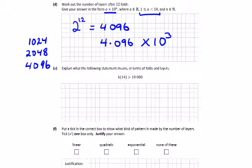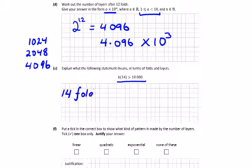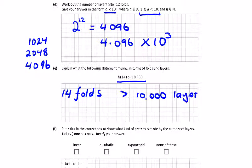Part e asks us to explain what the following statement means in terms of layers and folds: h(14). Since we put 14 in for x, that means 14 folds will give more than 10,000 layers.